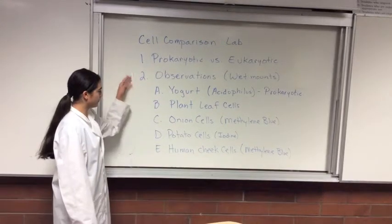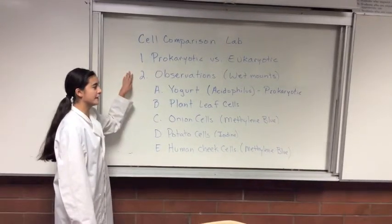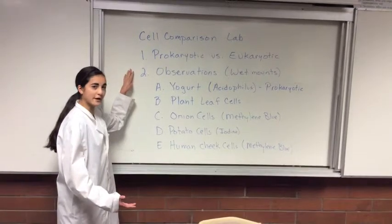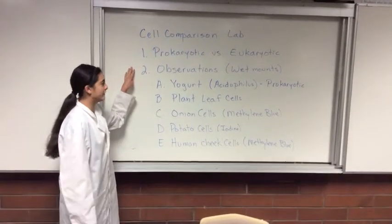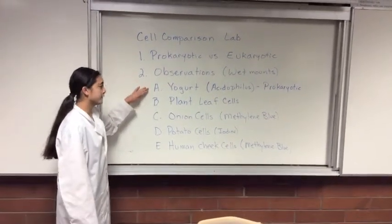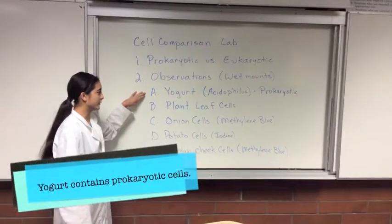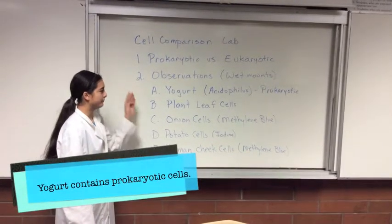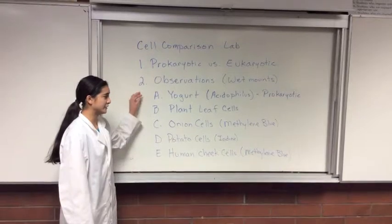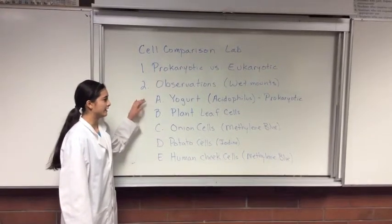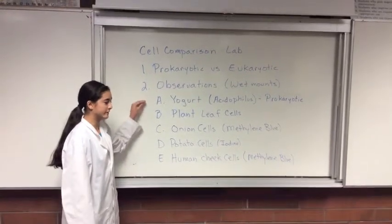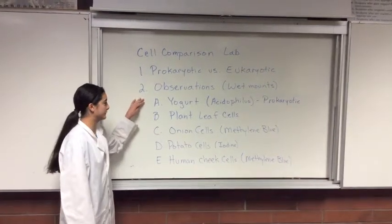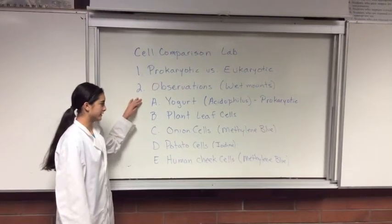For today's lab we will be making some observations, using wet mounts, and I'll teach you how to do that. The first thing we'll be observing is yogurt. Yogurt has a lot of bacteria in it, which makes it yogurt, and those are prokaryotic cells — the only prokaryotic cells we will be talking about today.